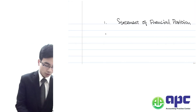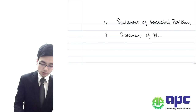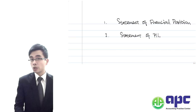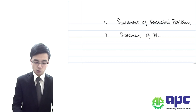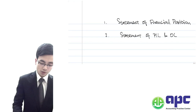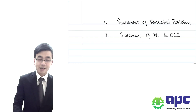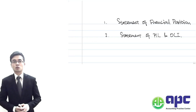Secondly, we have the Statement of Profit or Loss and Other Comprehensive Income — we'll use P&L for short, or we can call it the OCI — showing how much profit you've made during the year.